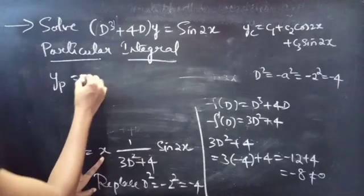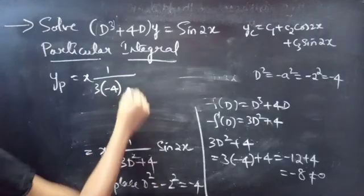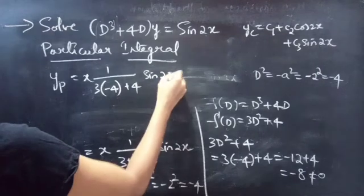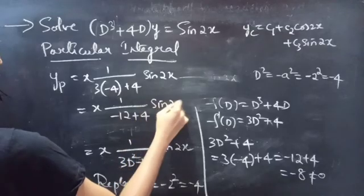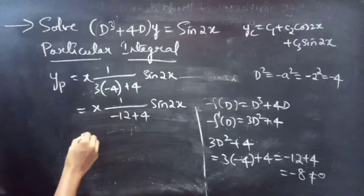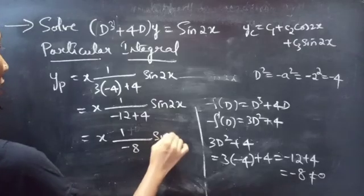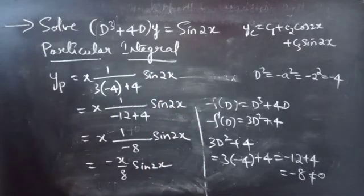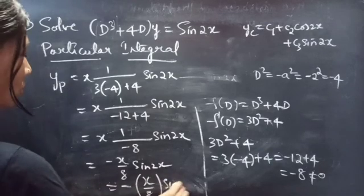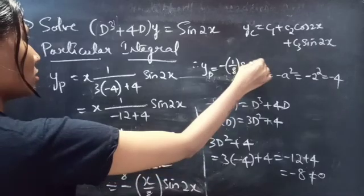Replacing D² by −4 in the denominator F′(D): yp = x · 1/(−12 + 4) · sin(2x) = x · 1/(−8) · sin(2x) = −x/8 · sin(2x). Therefore yp = −(1/8)·x·sin(2x).